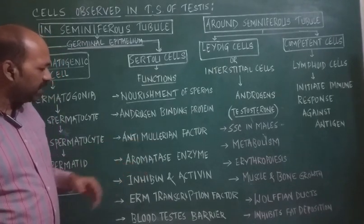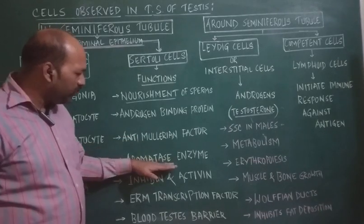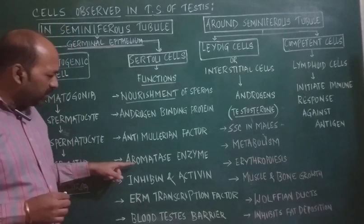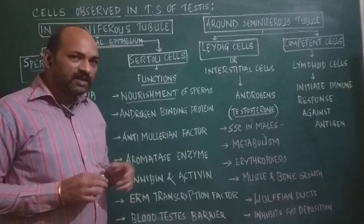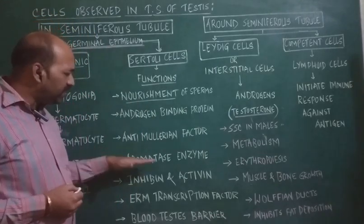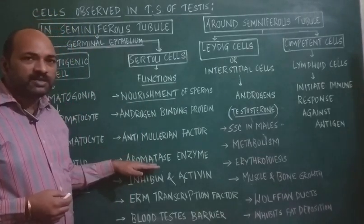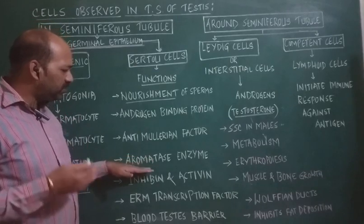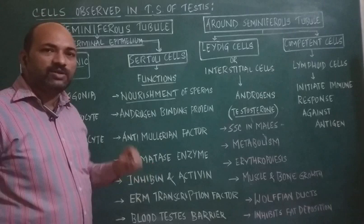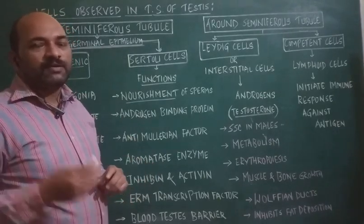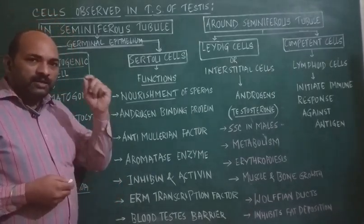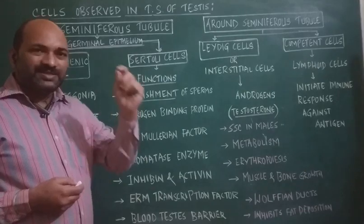Sertoli cells also produce estradiol aromatase enzyme. This enzyme inhibits or decreases testosterone levels by converting testosterone into estradiol. The increase in estradiol gives a negative feedback to the hypothalamus, and when the hypothalamus receives this negative feedback, the spermatogenesis process starts decreasing.